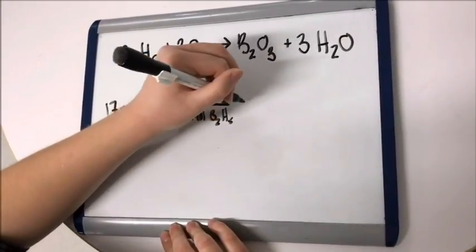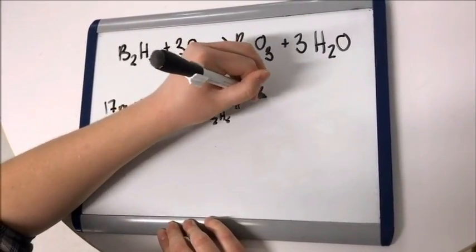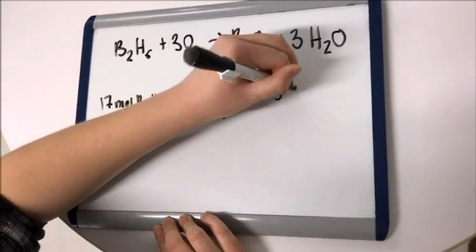Then you multiply the molar mass of O2 which is 32 grams and divide that by 1 mole of O2.